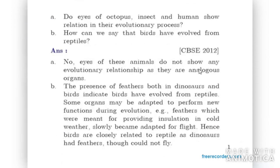Next question: Do the eyes of octopus, insect, and human show a relation in their evolutionary process? The answer is no, because eyes of these animals do not show any evolutionary relationship — they are analogous organs. Analogous organs have quite different internal structures; their function might be the same but their structure is altogether different, like wings in bats, birds, and insects.